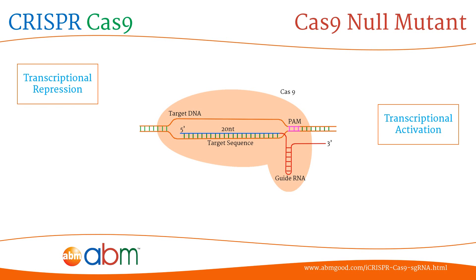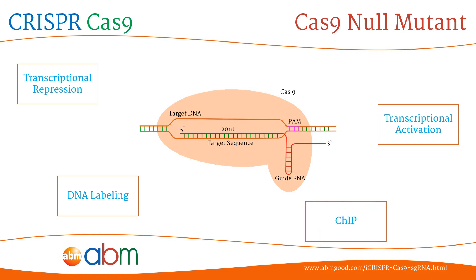Third, for DNA labeling, this is done by fusion of the Cas9 null mutant with a fluorescent tag for genome imaging. And finally, for chromatin immunoprecipitation, this is done by fusion of the Cas9 null mutant with an antibody epitope tag to facilitate the pull-down of specific genomic loci.